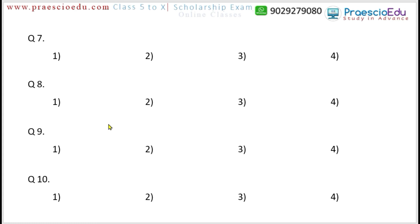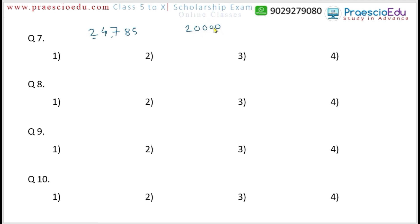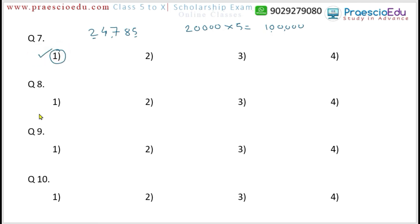Question 7: What is the product of the place values of the digits having the greatest and smallest place values in the number 2,44,785? The greatest place value digit is 2 at the ten-thousands place, so its place value is 20,000. The smallest place value is the units digit 5, with place value 5. The product is 20,000 × 5 = 1,00,000, which is 1 lakh. Option number 1 is correct.